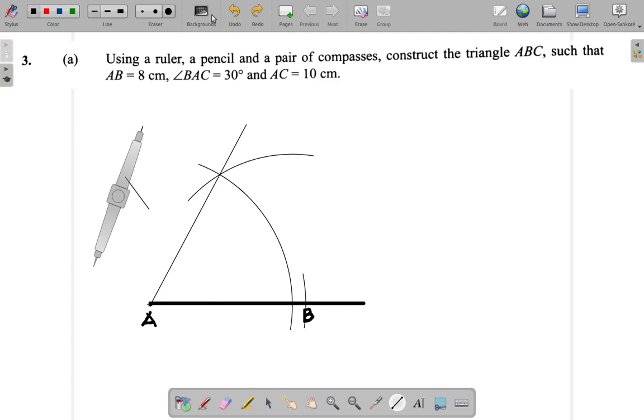After that, I'm ready to bisect the angle. So I can reduce my radius. I place my compass point here and I swing an arc here. I could change the radius now if I wanted. And I swing an arc here.